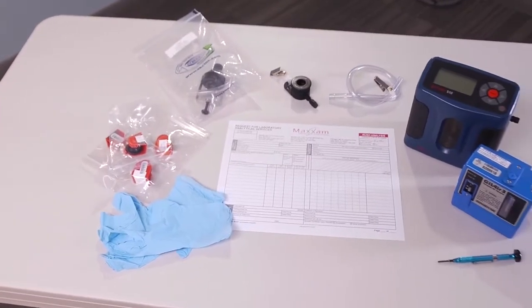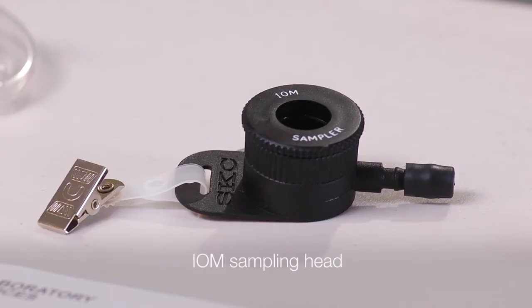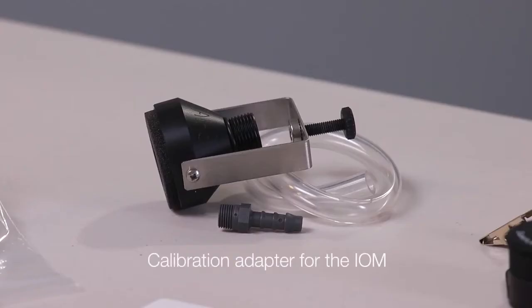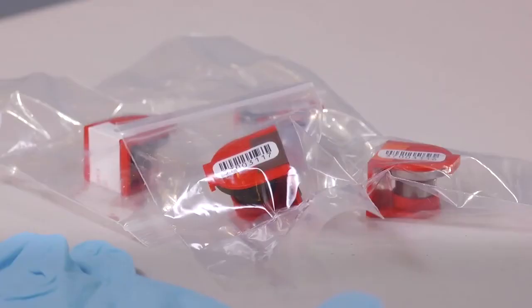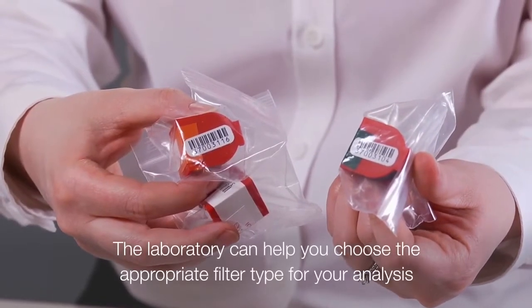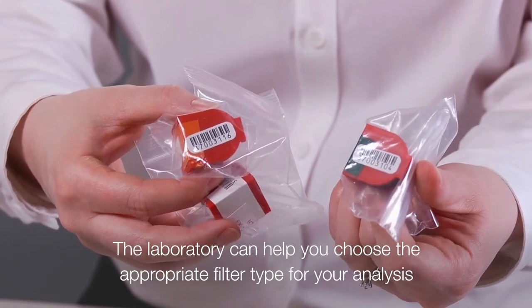This video will demonstrate how to collect air samples for inhalable dust using inhalable or IOM samplers. You will need IOM sampling head, a calibration adapter for the IOM, sampling cassettes and transport clips. The laboratory can help you choose the appropriate filter type for your analysis.